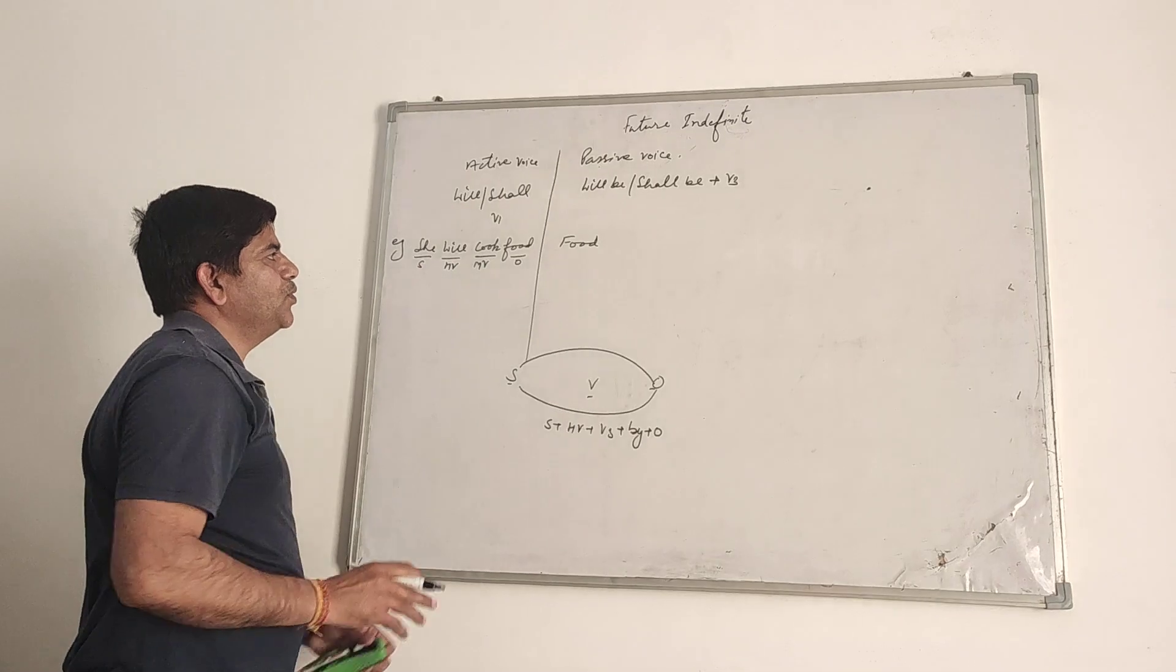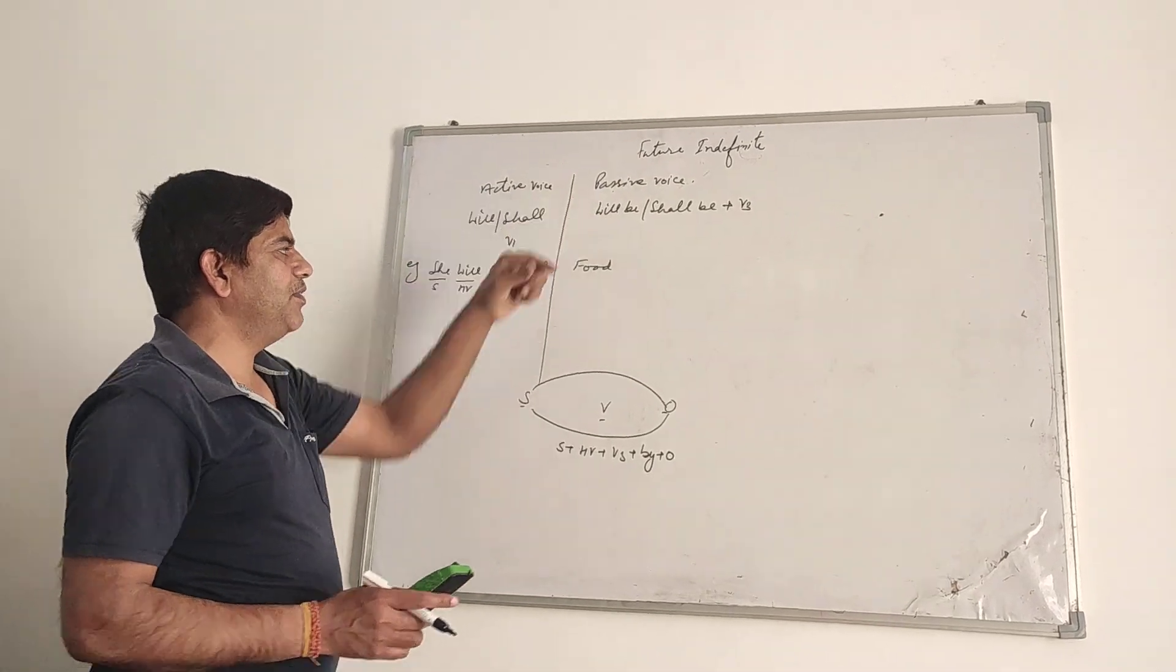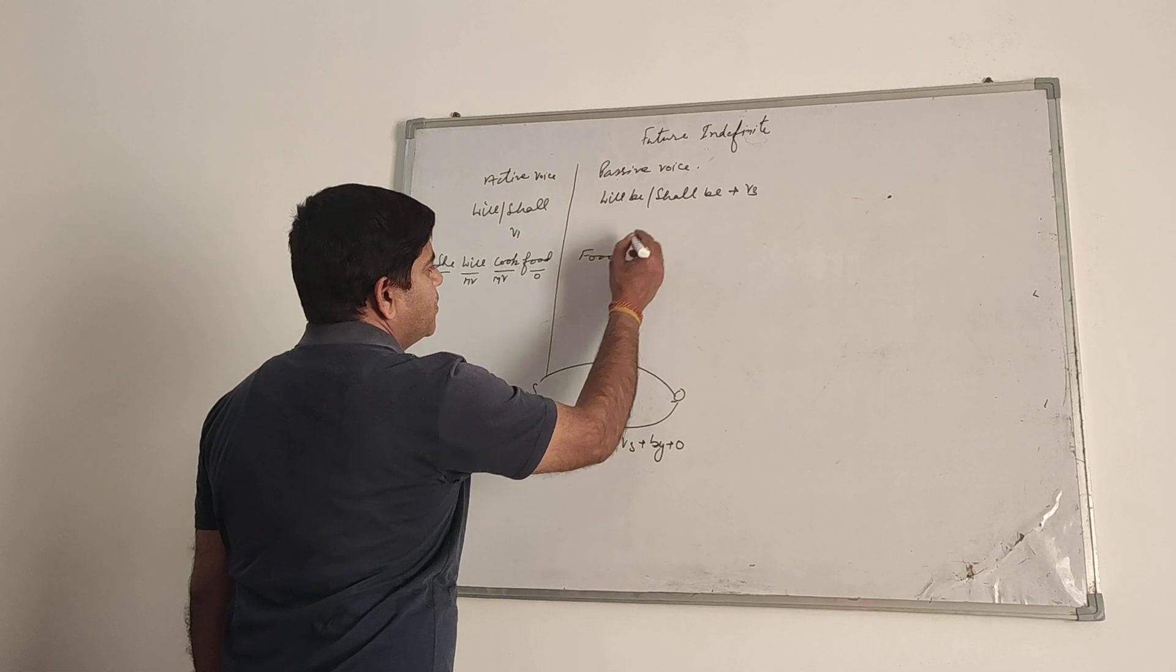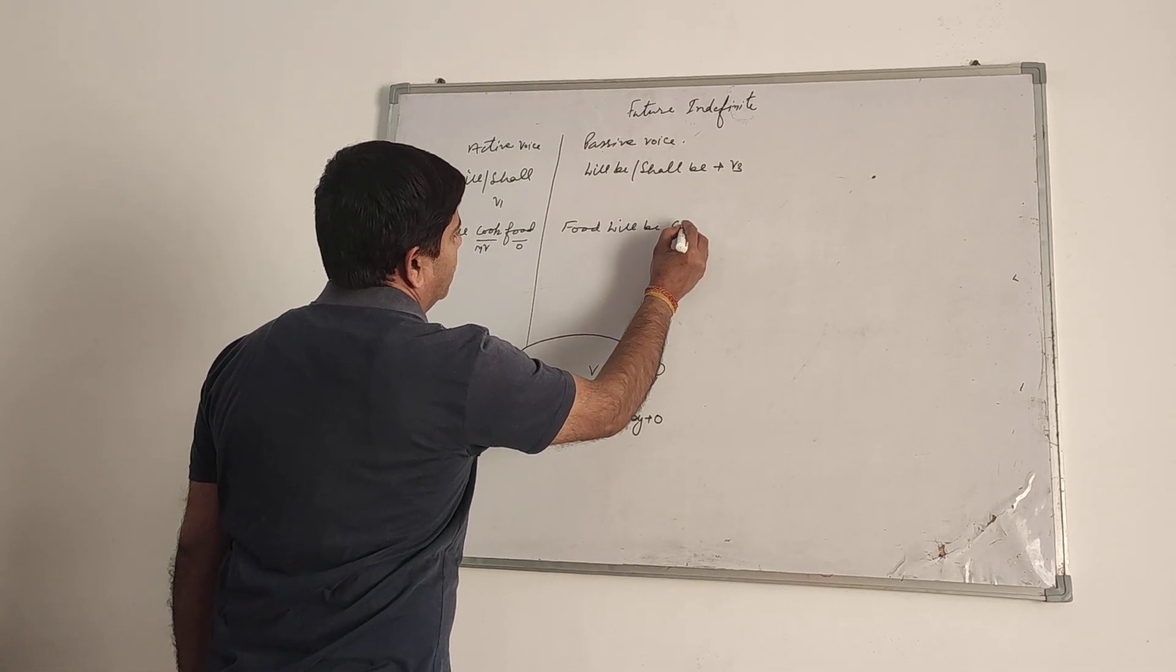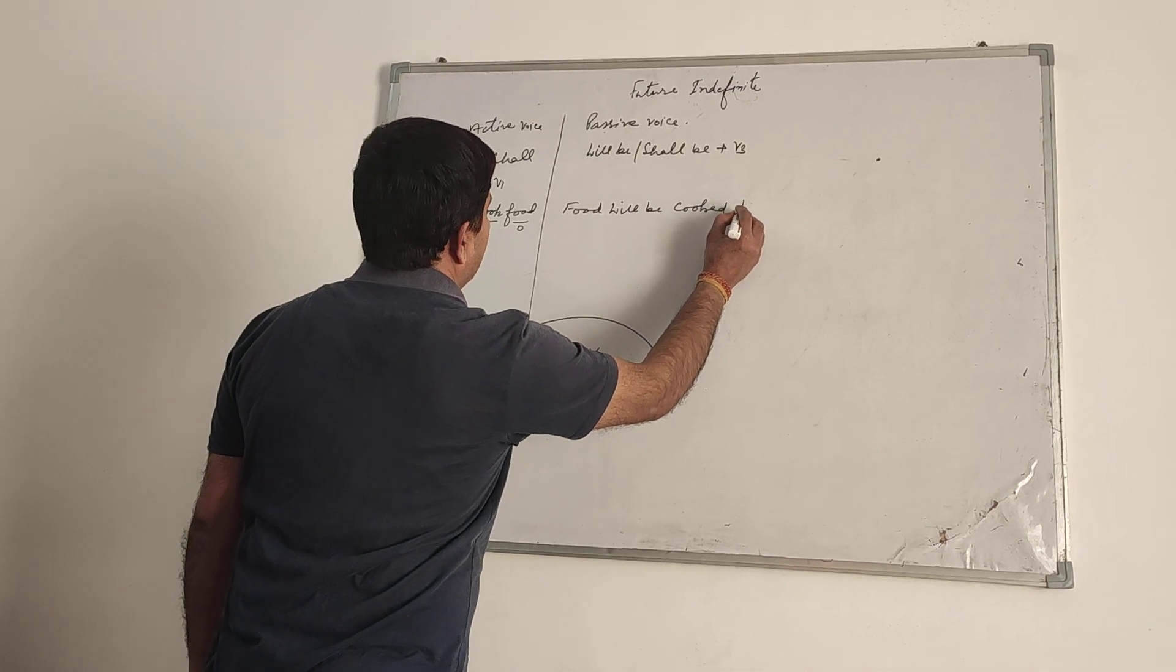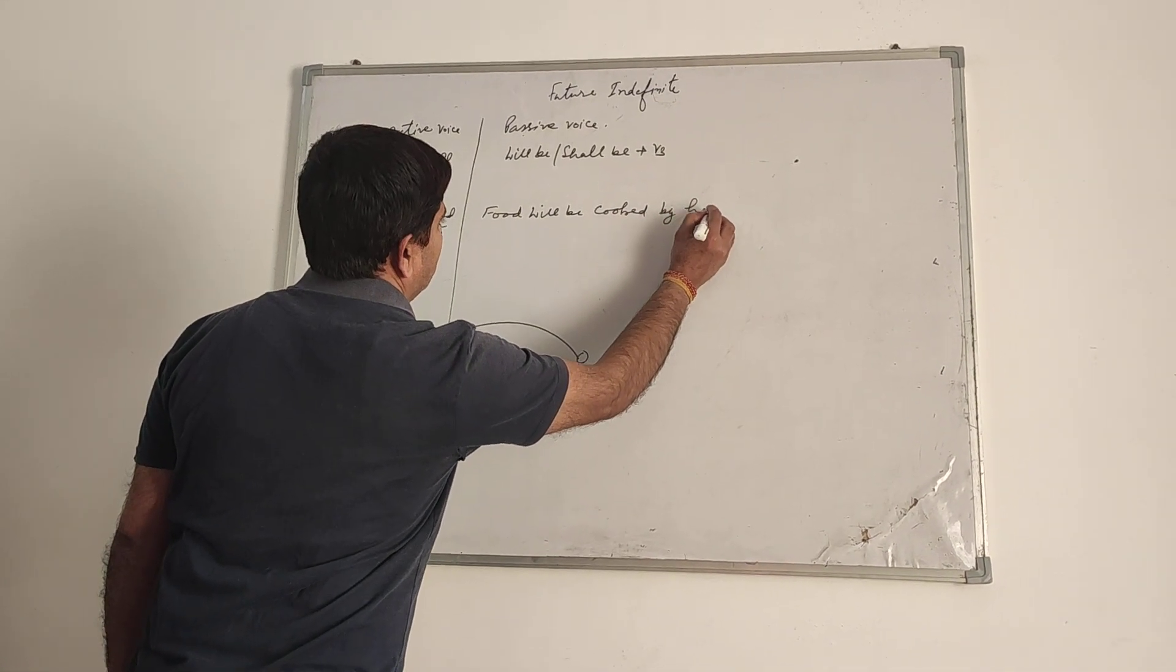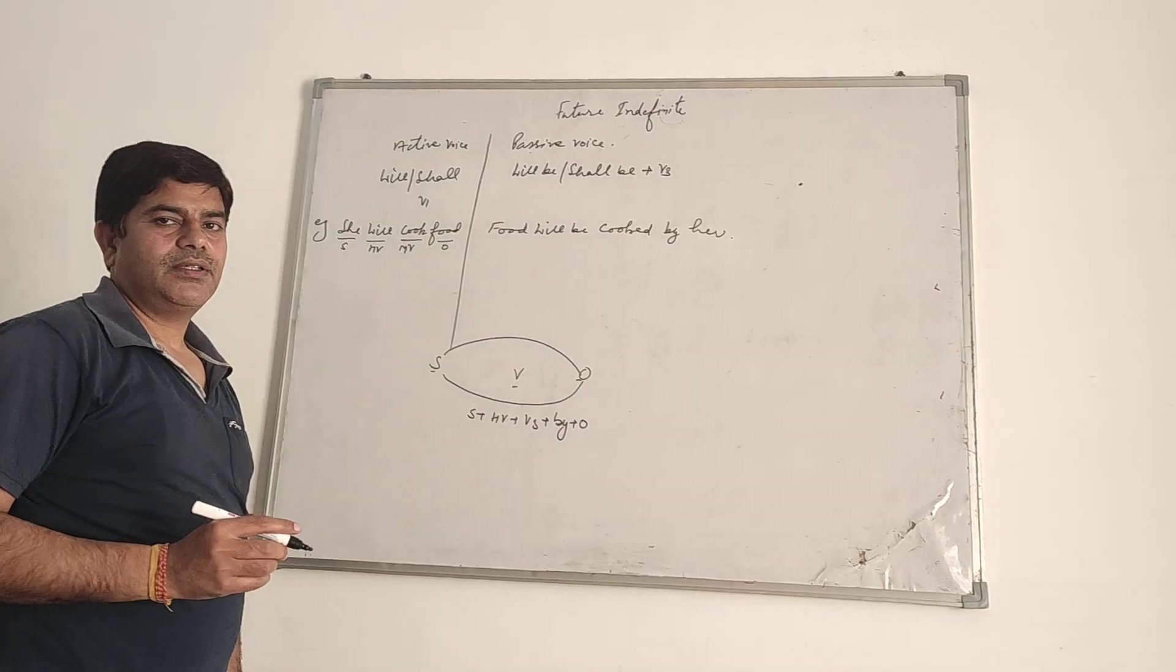Now what we have to do? On the place of will, we have to write will be. Food will be - because it is a rule of passive voice. Food will be third form - cooked by her. She will change into her.